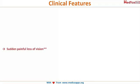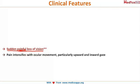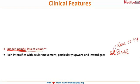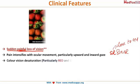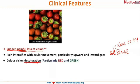The most important feature with which the patient presents is a sudden painful loss of vision. The pain intensifies with ocular movement, particularly when the patient looks upward or inward toward the medial side. This is because the superior rectus and medial rectus muscles, located close to the optic nerve, contract and increase the pain during these movements.